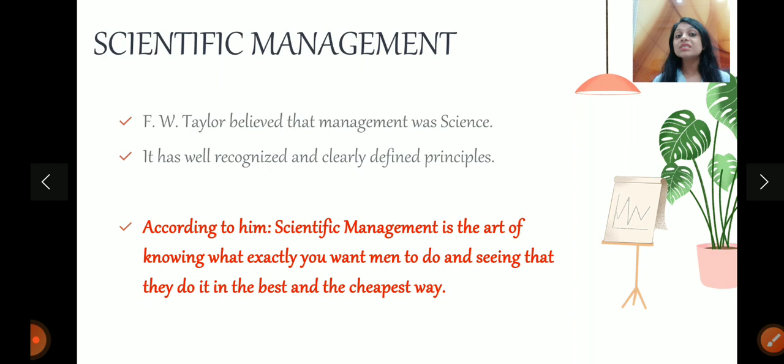According to Taylor, scientific management is the art of knowing what exactly you want men to do, and seeing that they do it in the best and the cheapest way. You should properly, clearly, analytically, scientifically know what work you want done. And, that work should be done in the best possible way. This was the ideology behind the scientific management.